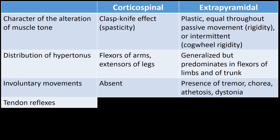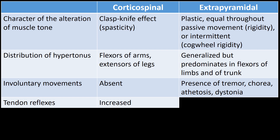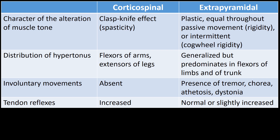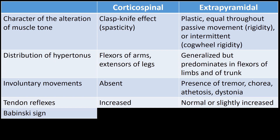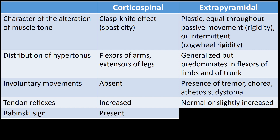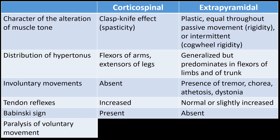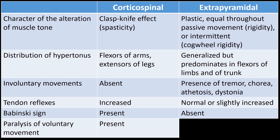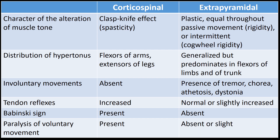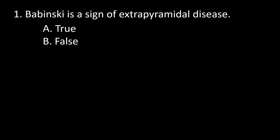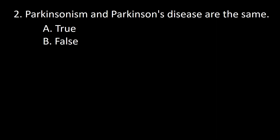Tendon reflexes are increased in corticospinal pathology and normal or slightly increased in patients with extrapyramidal pathology. Babinski's sign is present in patients with corticospinal pathology, absent in extrapyramidal pathology. Inability to voluntarily generate movements occurs in corticospinal pathology but is absent or only minimal in extrapyramidal pathology. So the answer to this question is B.